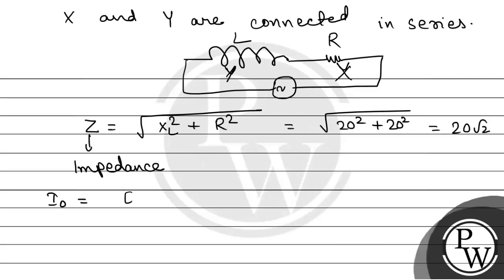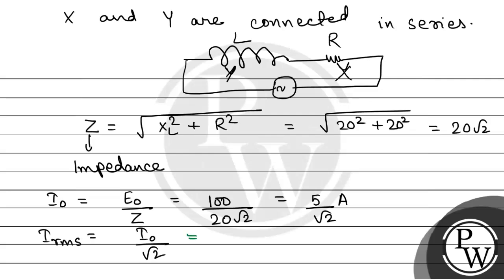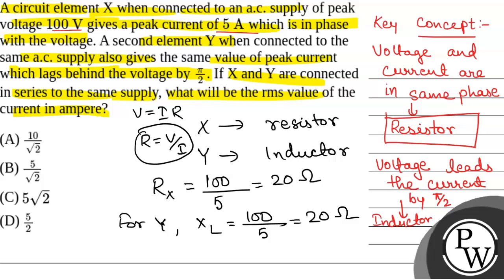The peak value of current I₀ will be the peak value of voltage E₀ divided by the impedance of the LR circuit. The peak voltage is 100 volt and impedance is 20 root 2, so I₀ will be equal to 5 by root 2 ampere. The RMS value of current will be equal to I₀ divided by root 2, that is 5 by root 2 divided by root 2, which equals 5 by 2 ampere — that is 2.5 ampere. So the RMS value of current is 2.5 ampere.